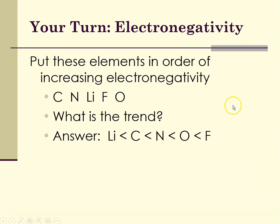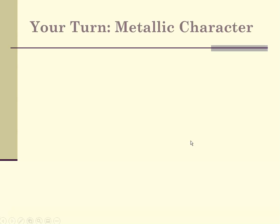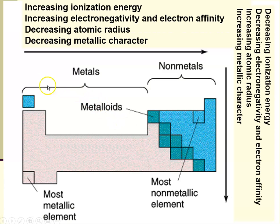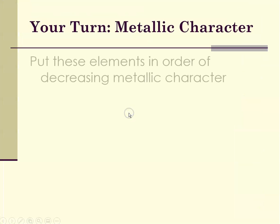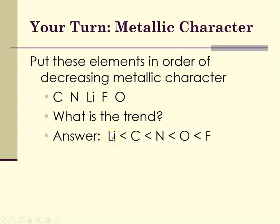The way you do these is you ask yourself what the trend is, and then rank them according to that trend. Last one we're going to do is metallic character. Metals are here, non-metals are here — metallic character decreases across a period and increases from top to bottom. The most metallic element is in the lower left and the least metallic is in the upper right. Put these elements in order of decreasing metallic character — same period. Metallic character decreases from left to right, so lithium would be the most metallic and fluorine would be the least metallic.